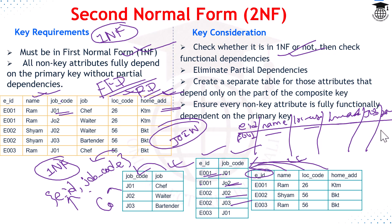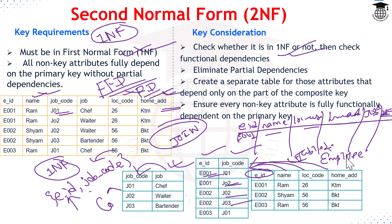If you want to combine the data, you can use job code as a linking attribute between the two relations. To achieve 2NF, we must ensure all non-key attributes are fully functionally dependent on the primary key without partial dependency. The original table is decomposed into an employee table and a job assignment table.